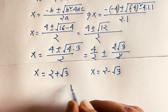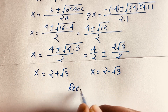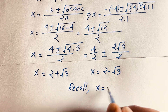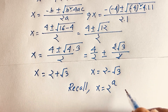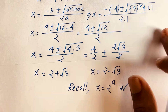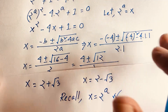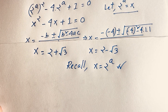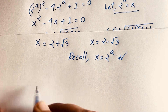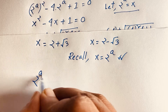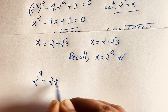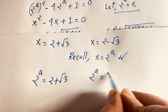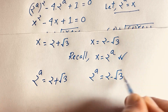Recall that x = 2^a. So we have two cases: 2^a = 2 + √3, and 2^a = 2 − √3.